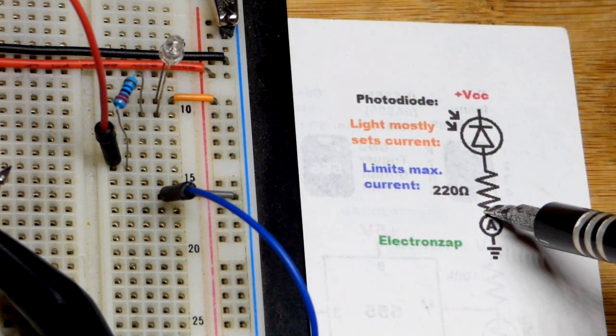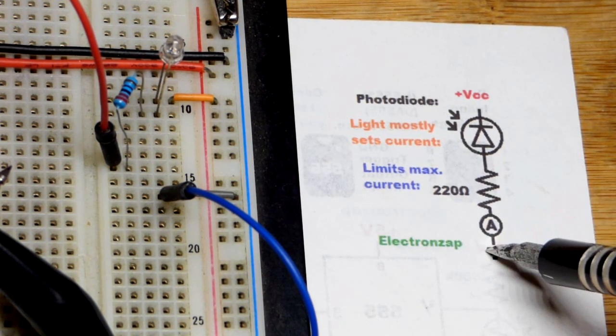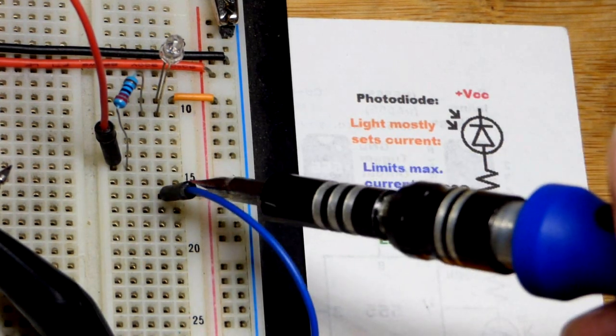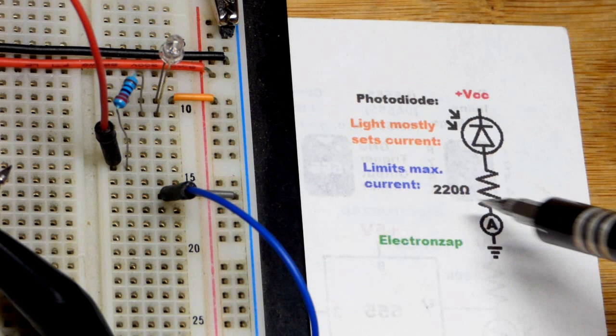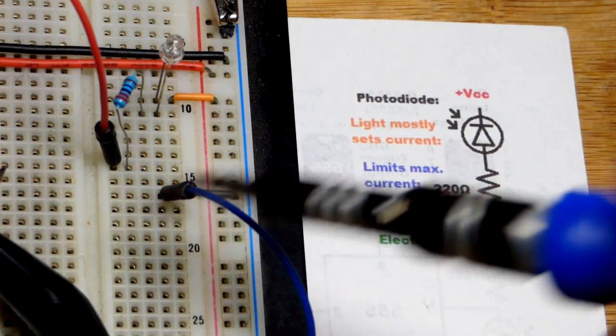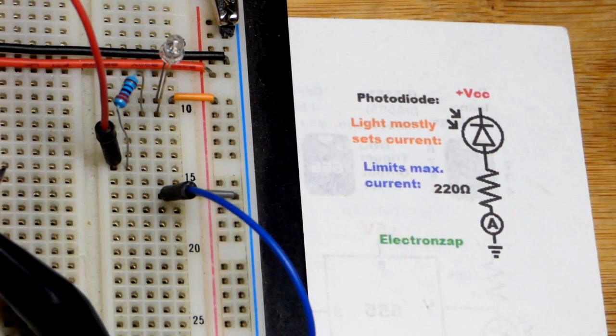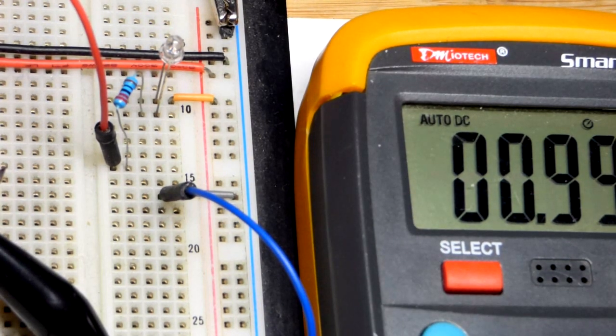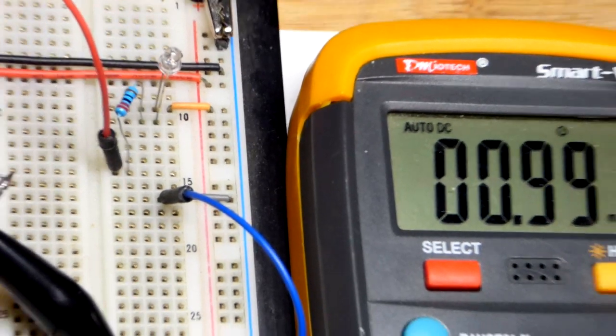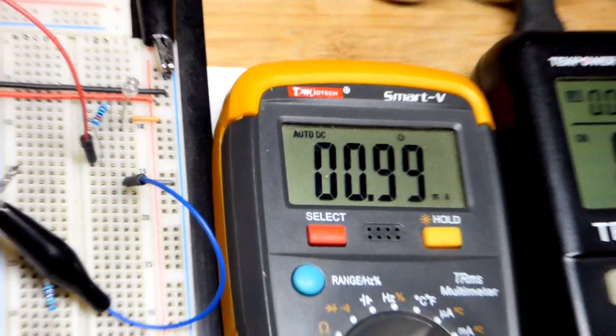And then we have a meter set to measure current. It's a multimeter. That's a symbol for an ammeter or a current meter. I just clipped these jumpers to the probes right there. And you'll see with this light level here we have about 1 milliamp of current through the meter right now.